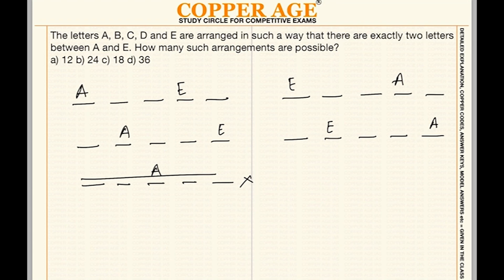Once A and E are fixed, the remaining positions for B, C, and D can be filled in three ways, then two ways, then one way — giving a total of six arrangements for each set.